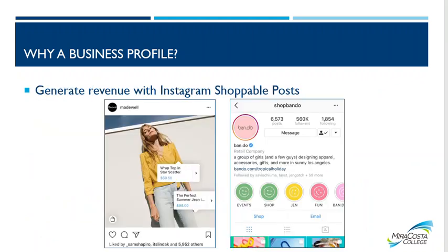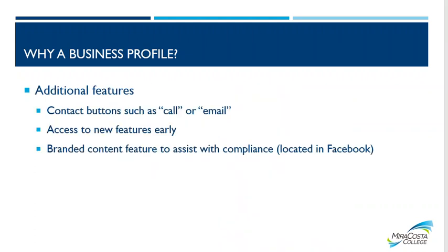Continuing with business profile benefits: you can generate revenue with Instagram shoppable posts. You just click shop in the highlight section and you can see the links and go shop — they make it really easy for you to make a purchase. Additional features include contact buttons such as call or email, access to new features early, and a branded content feature to assist with compliance, which is located in the Facebook settings.